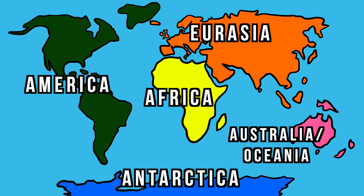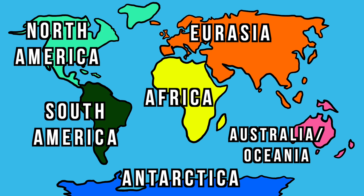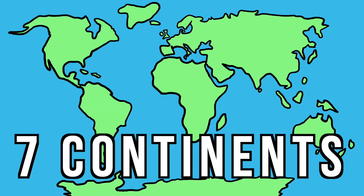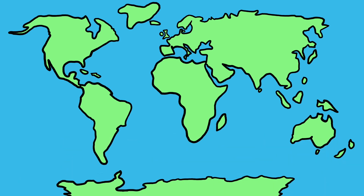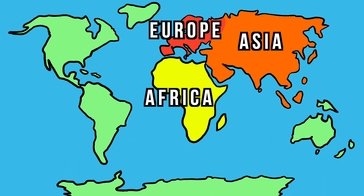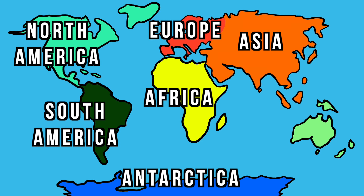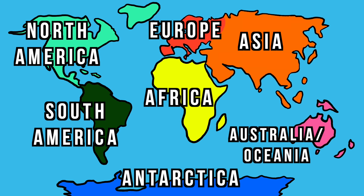The second six continent model combines Asia and Europe back together and splits North and South America into their own continents. But finally, there's the model that most of us know — the seven continent model. In this one, we have Africa, Asia, Europe, North and South America, Antarctica, and Australia.